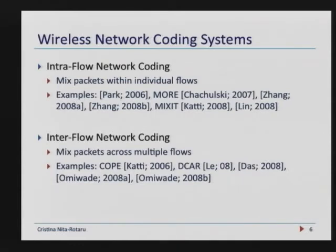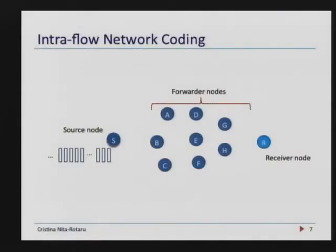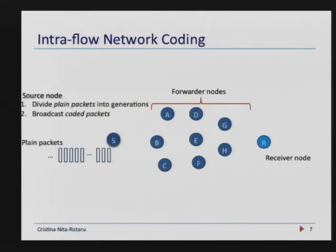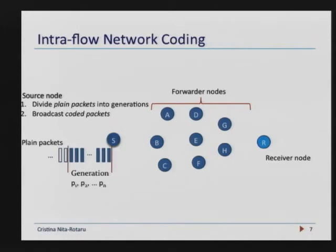Both types have certain aspects that make them less robust when we think as an adversary. I want to show you an example of how you take that simple idea of forwarding a linear combination and actually build a system. For intra-flow network coding, packets sent by the source are divided into what are called generations — groups of packets. The source moves from one generation to another; the goal is for each set of packets to be received by the receivers.